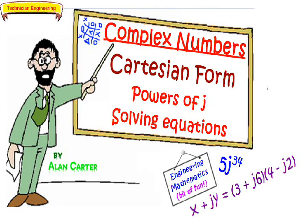Hello, and welcome to this presentation on complex numbers in Cartesian form. This presentation assumes you've seen a previous presentation related to arithmetic operations in Cartesian form. Here we're going to look at powers of j, something like 5j to the 34, and also how to solve complex number equations in Cartesian form.